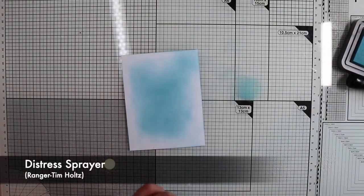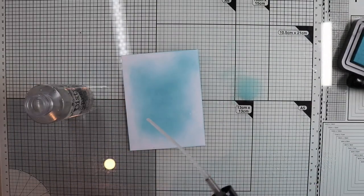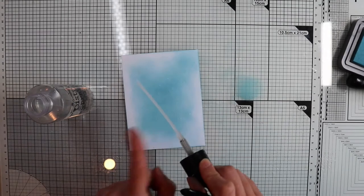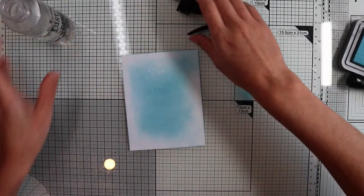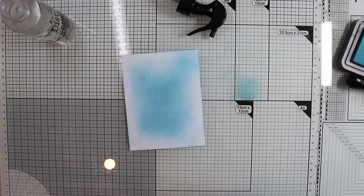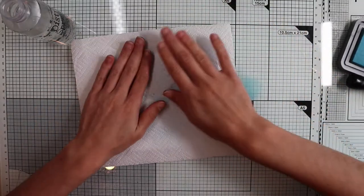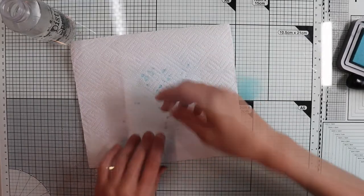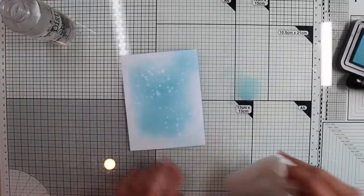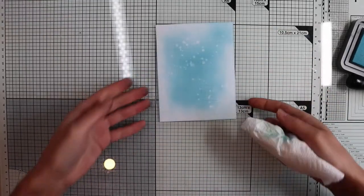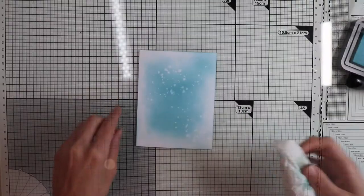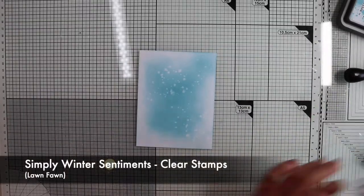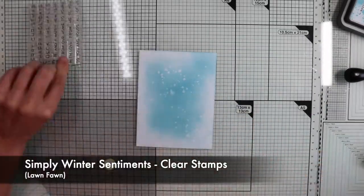I proceed in circular motions starting from the middle of the panel, which will be darker, fading as I move toward the edges. Distress Oxide reacts with water, therefore, a technique that I love to use is the splashing. I simply spray a few drops of water on the surface, I let it react for a few seconds and I dry it with a sheet of kitchen paper. Look at that, they are a kind of ghost drops. It is a very easy technique, but really pretty.